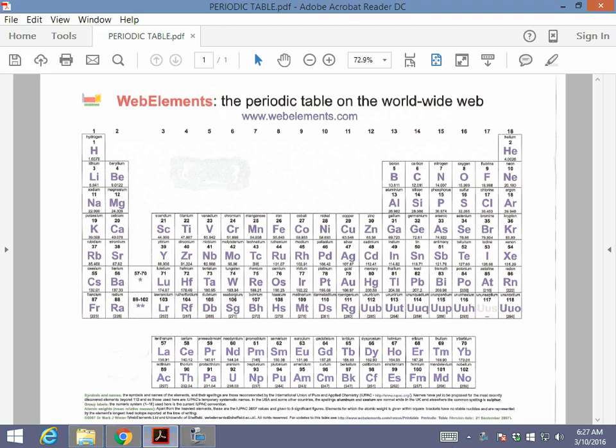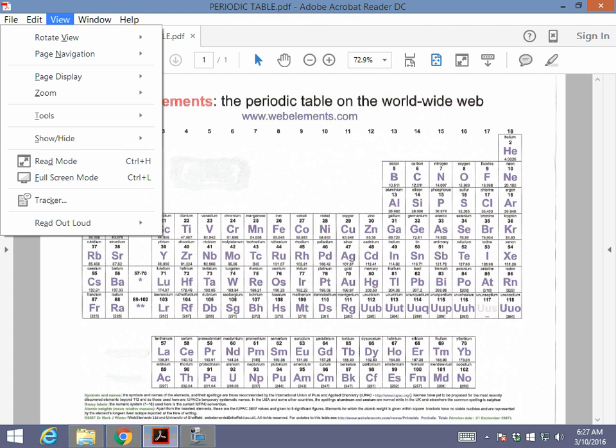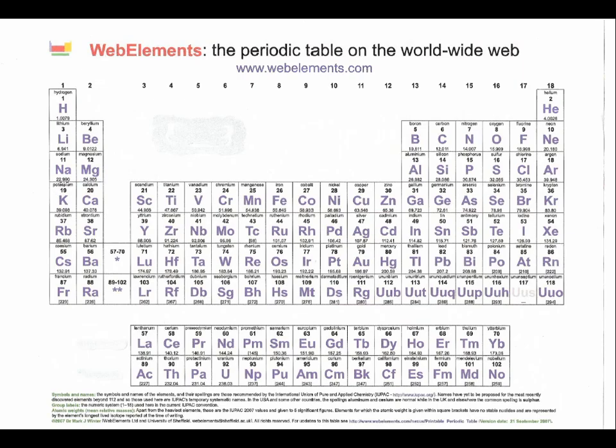Hello. Today we'll be looking at the periodic table. What we're going to do is show a breakdown of the table in order to prepare it for electron configuration. Our goal here is to get you ready for electron ground state configuration. First things first, let's break this table down into its components.